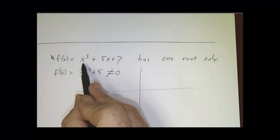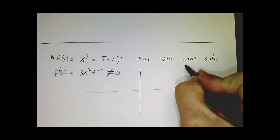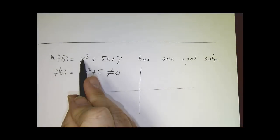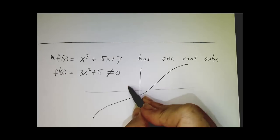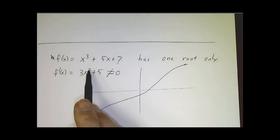Now you have to have one root, because if you plug in a large value of x, you get something positive. If you plug in a large negative value of x, you get something negative. So somewhere in between, you had to cross the axis, but you couldn't cross it twice, because if you crossed it twice, then Rolle's theorem would say the derivative would have to be zero somewhere, and it isn't.